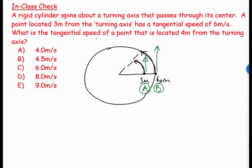And what do I know? Well, I know that r_A equals 3 meters. r_B is equal to 4 meters. And I know that the tangential velocity for A, v_t, is equal to 6 meters per second, v_tA. And v_tB is equal, I don't know.